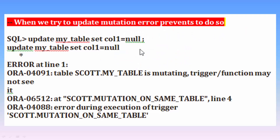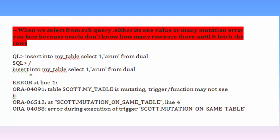With the before row-level trigger and update: when we try to update the table simply, we get a mutation error. Again, with a sub-query, when we try to insert a record using a sub-query, we again get a mutation error.